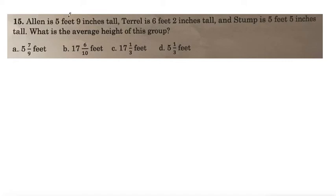So this problem says, Alan is 5 feet 9 inches tall, Terrell is 6 feet 2 inches tall, and Stump is 5 feet 5 inches tall. What is the average height of this group?